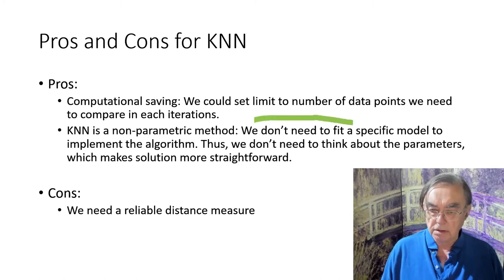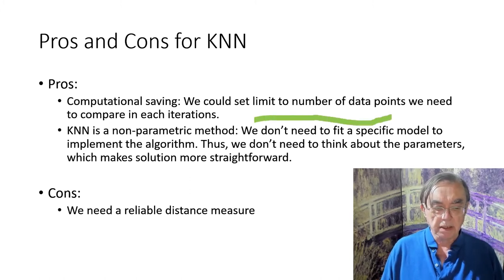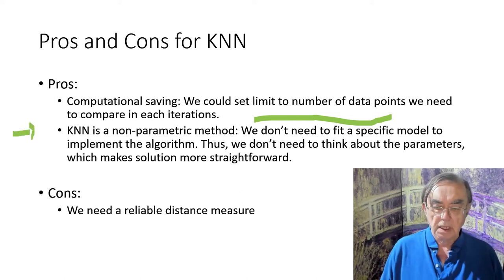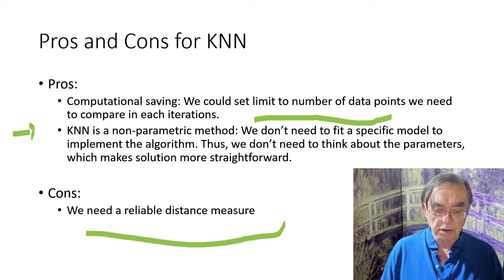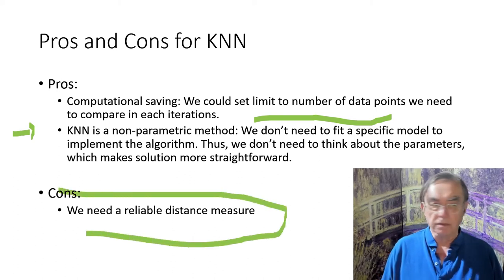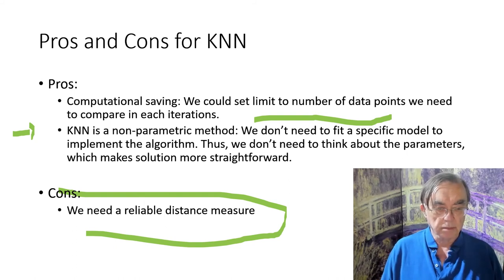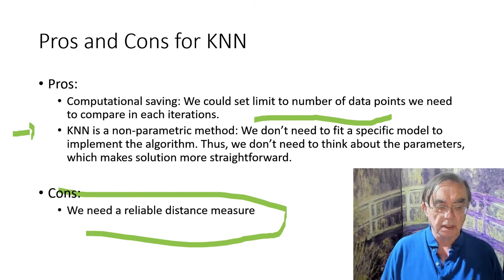So we can control the computation by choosing k. There are absolutely no parameters whatsoever — we don't have to think of a model or think about parameters. We do need a reliable distance, but all methods need that, so that's not really a con. The main con is that it doesn't use the whole dataset — it just uses the neighbors.